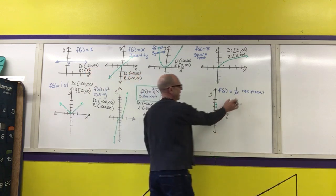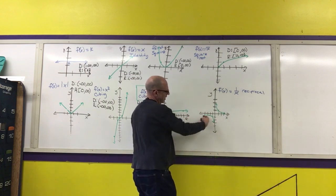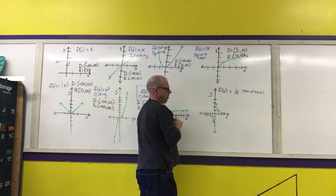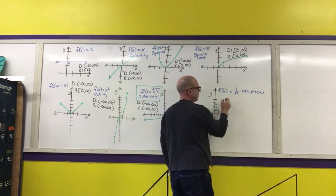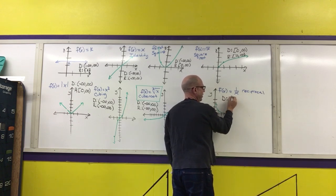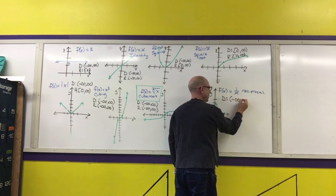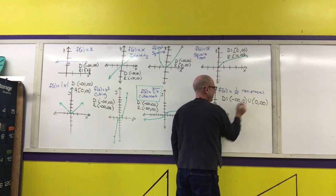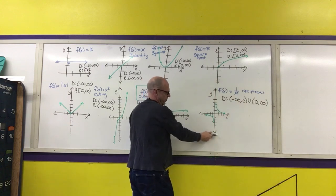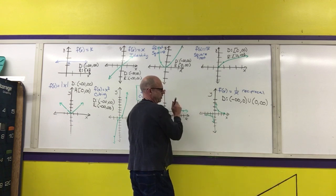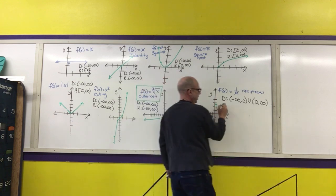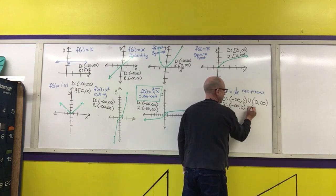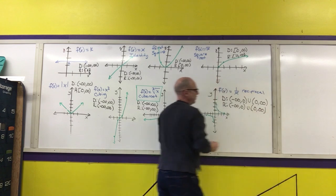The reciprocal function is not a polynomial. Any negative or positive value can be used for x, but zero cannot. So the domain is (-∞, 0) ∪ (0, ∞). Similarly, the y-values go from negative infinity up to but not including zero, and from zero to positive infinity, so the range is (-∞, 0) ∪ (0, ∞).